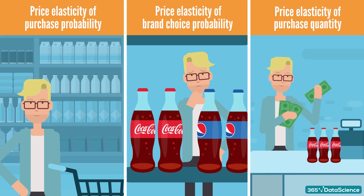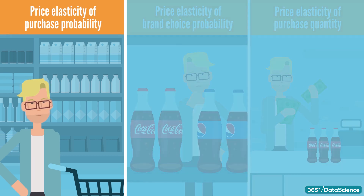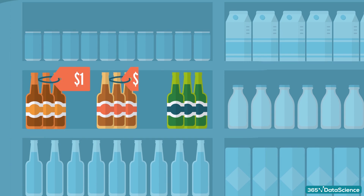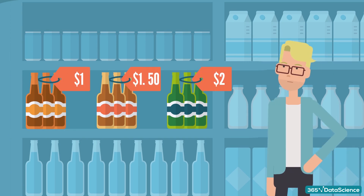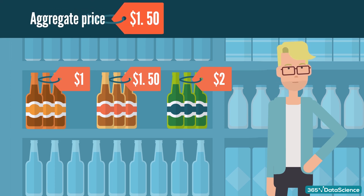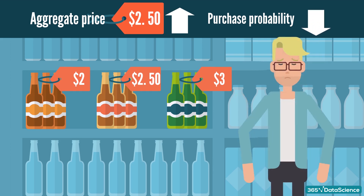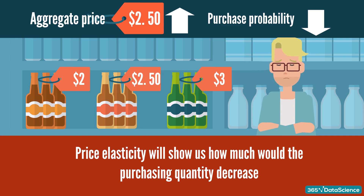What can we expect when we calculate the price elasticity of purchase probability? There may be a lot of different brands with different prices from the same product category on the market — for instance, the price of different brands of beer. Suppose we can calculate an aggregate price for the whole category. The law of demand says that if the aggregate price increases, the probability of purchasing a beer would decrease. Calculating price elasticity will show us how much exactly.